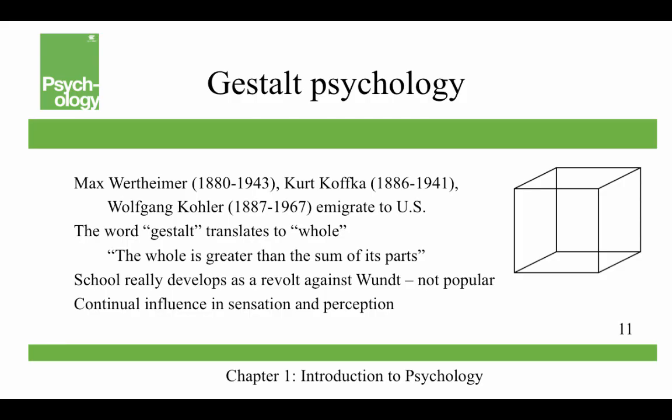Gestalt psychology also grew up in Germany. Its major figures were Max Wertheimer, Kurt Kofka, and Wolfgang Kohler — all of whom immigrated to the United States fleeing Nazi Germany. The word Gestalt translates to 'whole,' and the idea is that the whole is greater than the sum of its parts. The school developed as a revolt against Wundt. They used perceptual ideas — for example, the Necker cube, where it's difficult to determine whether it's projecting forward or moving backward in space. You can see it both ways, but not simultaneously. Gestalt psychologists have a continual influence in sensation and perception research.